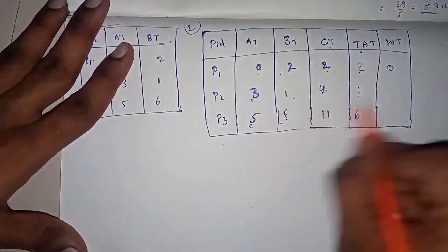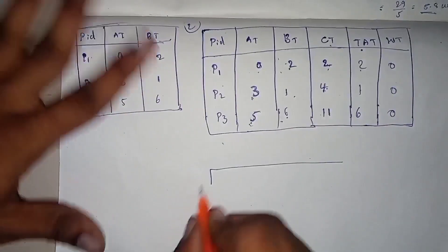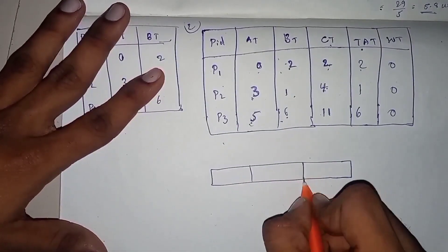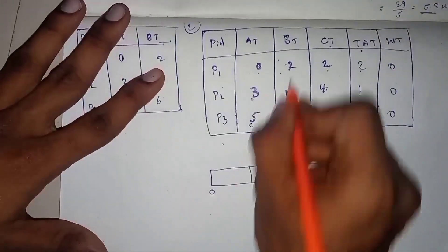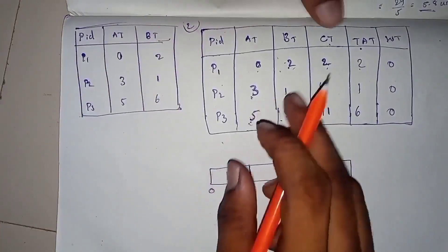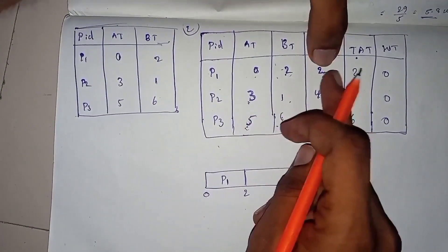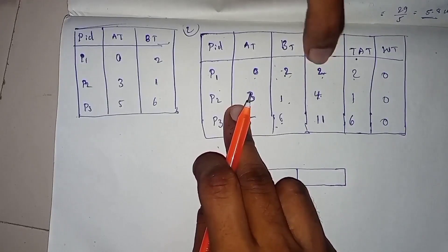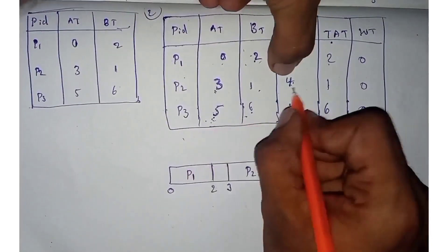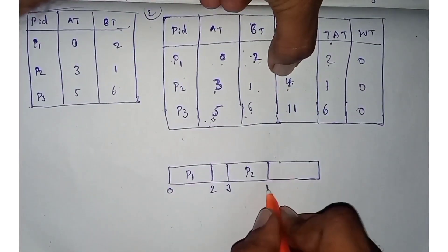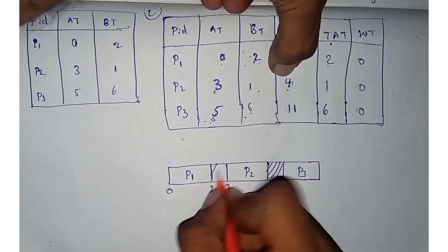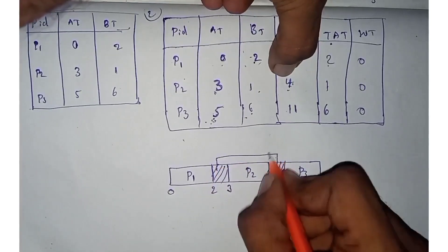2 minus 2 is 0, 1 minus 1 is 0, 1 minus 1 is 0. Now we need to adjust the Gantt chart — many processes, 3 processes. First arrival time is 0, then completion time is 2. The first process is the same. This is the minimum. P3 is late, so 4 is complete. P3 is late, so 2 states are idle.